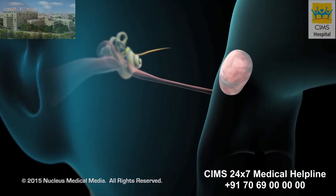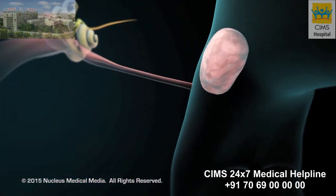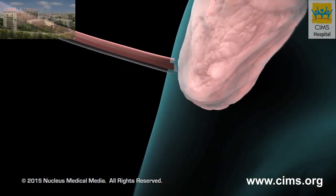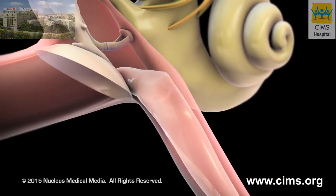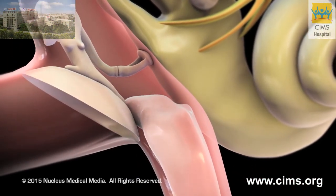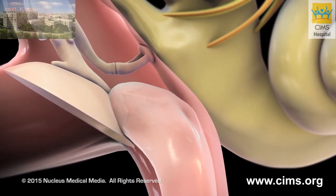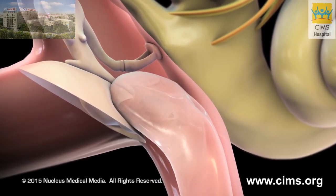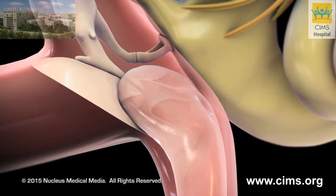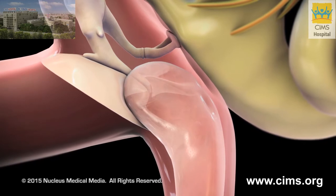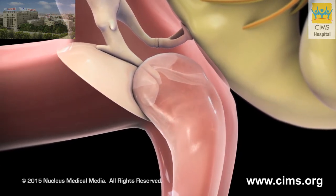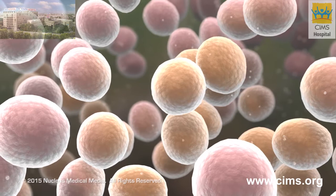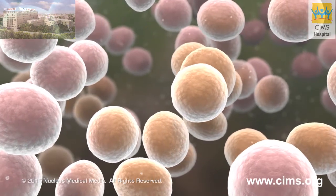An infection, allergy, mass, or enlarged adenoids can block the eustachian tube, allowing fluid to collect in the middle ear. Fluid prevents the eardrum from vibrating properly, blocking normal transmission of sound through the middle ear, which may cause hearing loss. In some instances, the fluid may become infected with bacteria, resulting in otitis media, or ear infection.